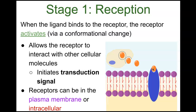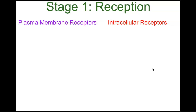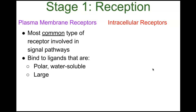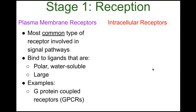Receptors can be in the plasma membrane or intracellular. Plasma membrane receptors are the most common type involved in a signaling pathway. They bind to ligands that are polar, water-soluble, and large. Examples include G protein-coupled receptors (GPCRs) and ligand-gated ion channels.